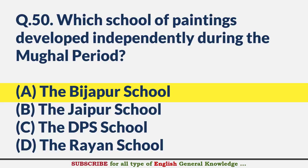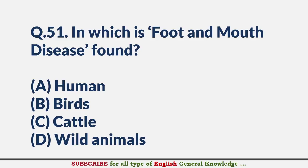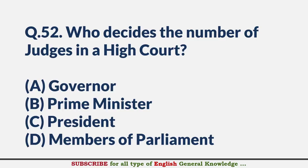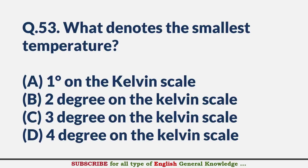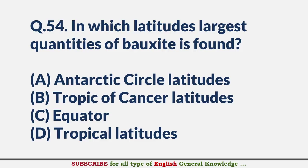In which animal is foot-and-mouth disease found? — Answer C: Cattle. Who decides the number of judges in a High Court? — Answer C: President. What denotes the smallest temperature? — Answer A: One degree on the Kelvin scale. In which latitudes are the largest quantities of bauxite found? — Answer D: Tropical latitudes.